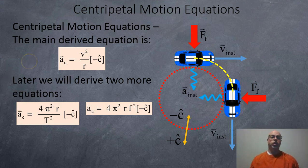Okay, so centripetal motion, the main derived equation from the last video was this one here. Centripetal acceleration is equal to your speed squared, or the magnitude of your instantaneous velocity squared, divided by the radius and is towards the center of the circle. So towards the center of the circle is the negative c-hat direction, and moving away is the positive c-hat.